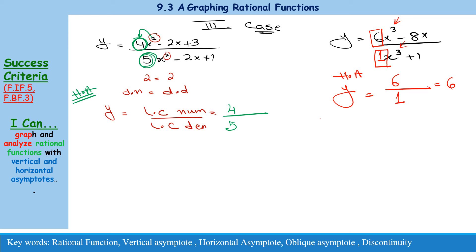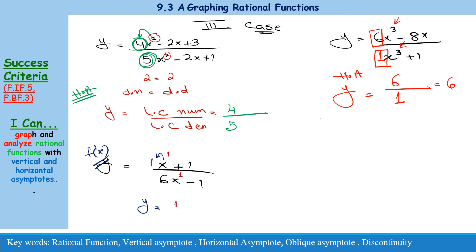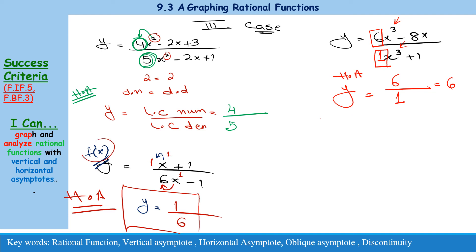One more example: y equals x plus 1 over 6x minus 1. The degree of the numerator is 1 and the degree of the denominator is also 1. The leading coefficient of the numerator is 1 and of the denominator is 6. So the horizontal asymptote is y equals 1 over 6.